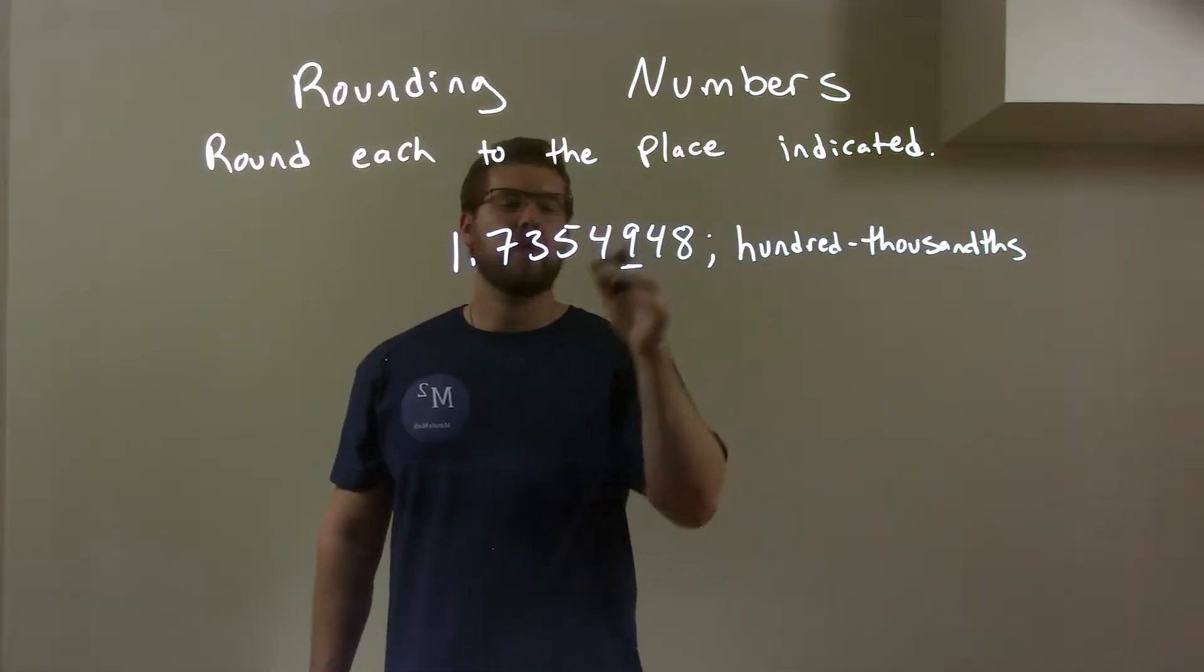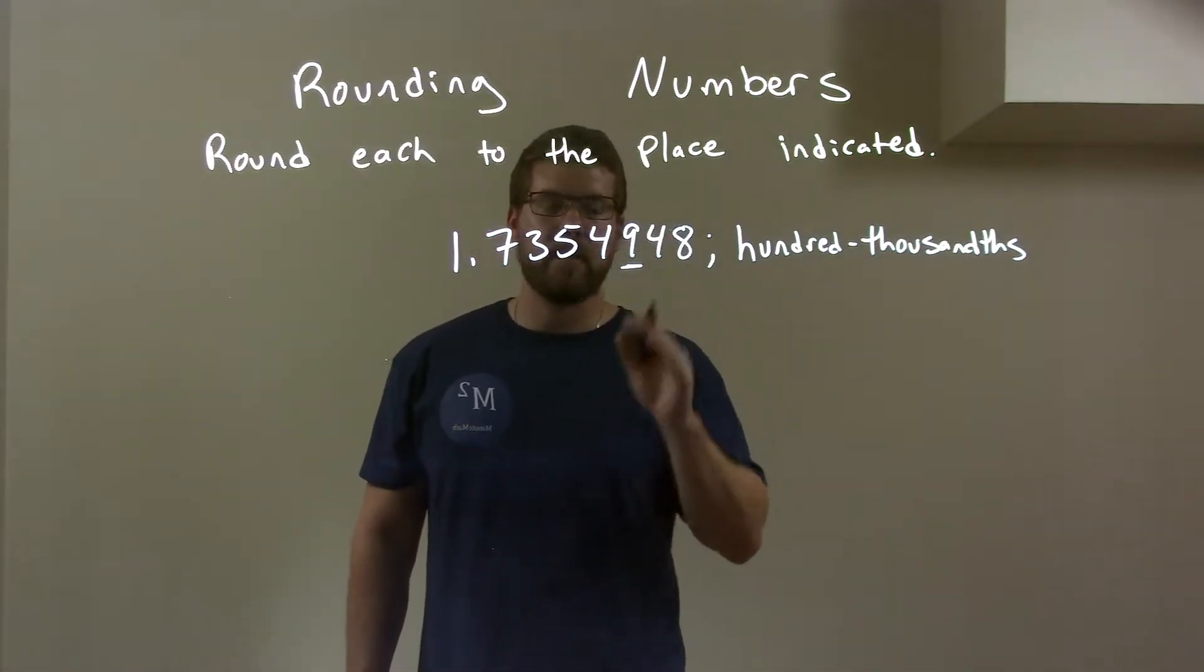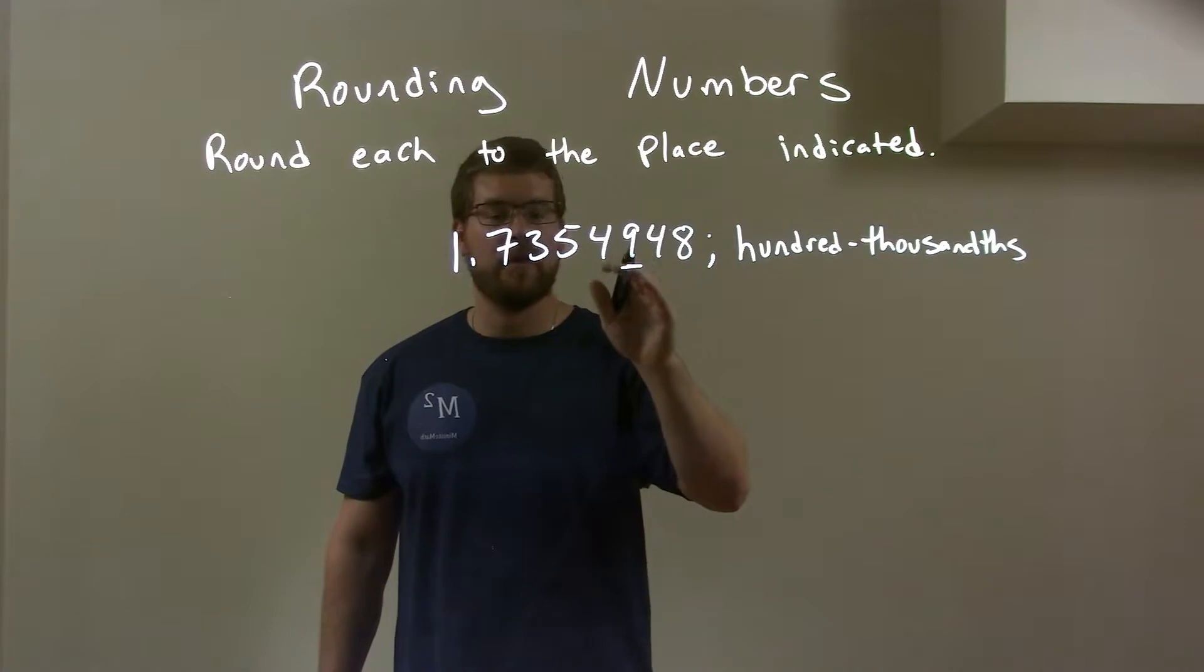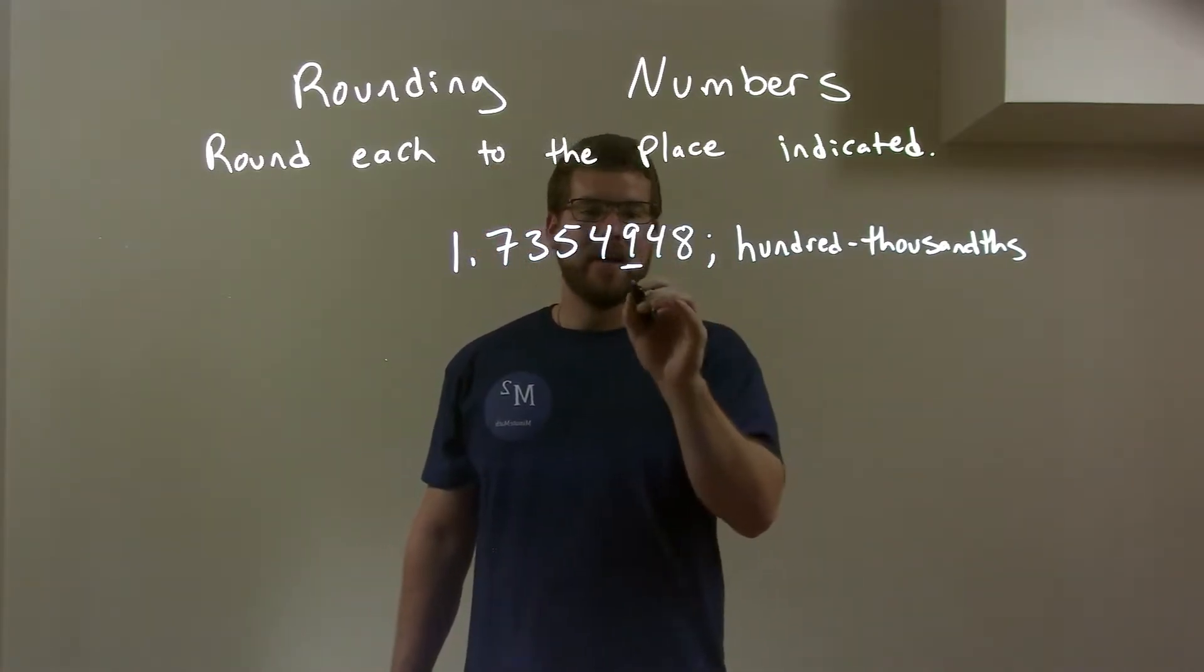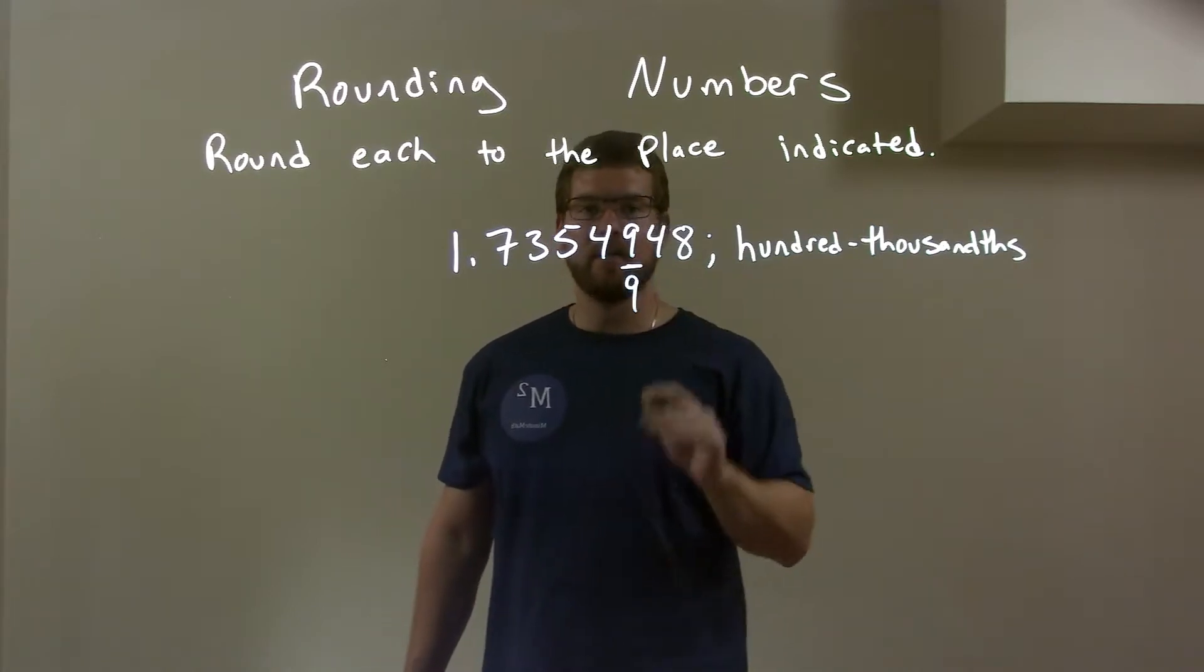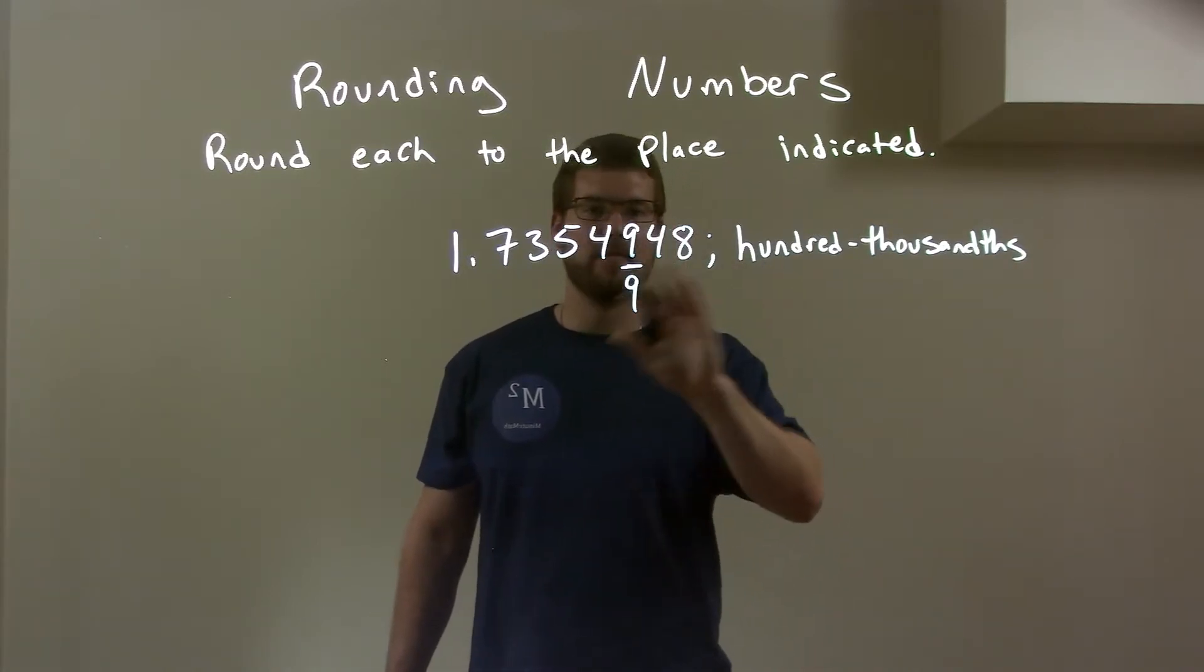So I look to the right of the 9. I see a 4. That 4 causes the 9 to round down because the 4 is between 0 and 4. So 9 rounds down keeping it a 9. To the right, the 4 is just left alone. 4, 8 left alone disappears.